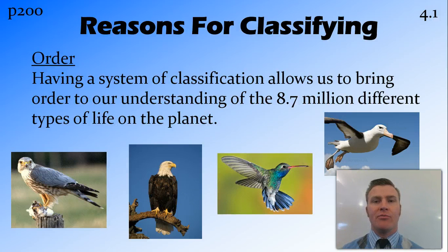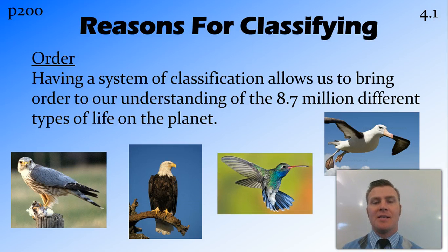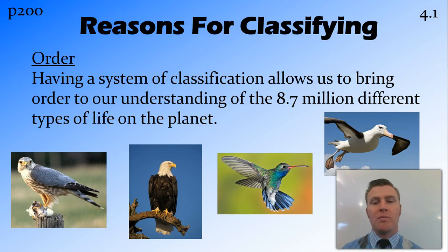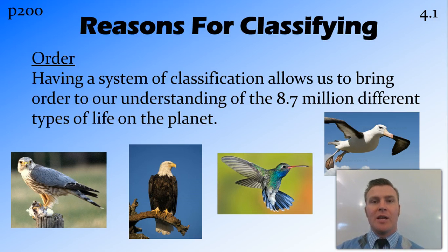There are a few different reasons that we have for classifying organisms. Firstly, it is to provide some sort of order to our understanding of the different animals around us and the relationships between those animals. There's an estimated 8.7 million different types of life on the planet, so without some sort of system, we wouldn't be able to work out all the different ones and we wouldn't be able to communicate about them to each other. So we need to group them to provide order for ease of use.